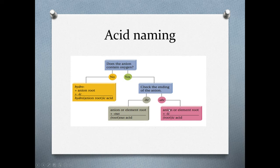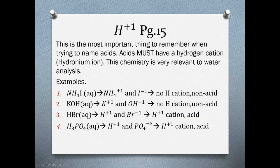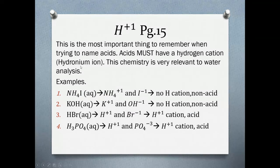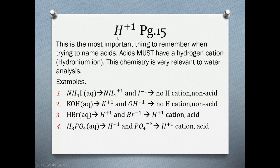The most important thing to remember when trying to name some acids: acids must have a hydrogen cation which we call a hydronium ion, and you'll hear that a couple thousand times moving forward because it is very relevant to water analysis and analyzers. Let's look at identifying acids. Acids must have this cation in the formula. NH4I aqueous - is this an acid? Does it have a positive hydronium ion as its cation? This is the cation and it's not H plus one. So no, it's not an acid because it doesn't have the cation.